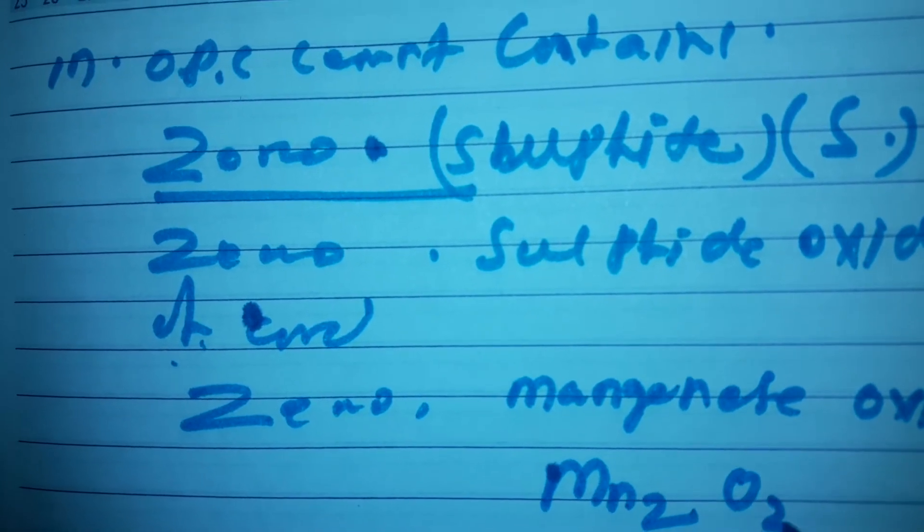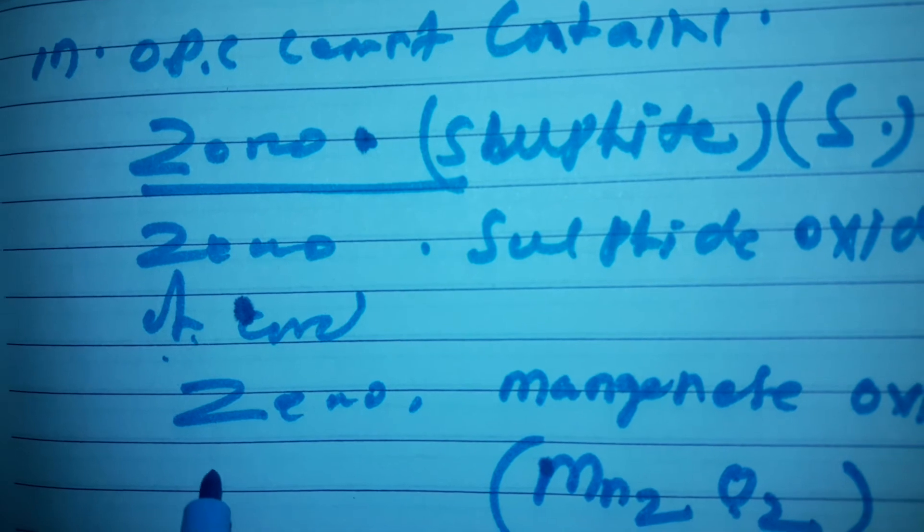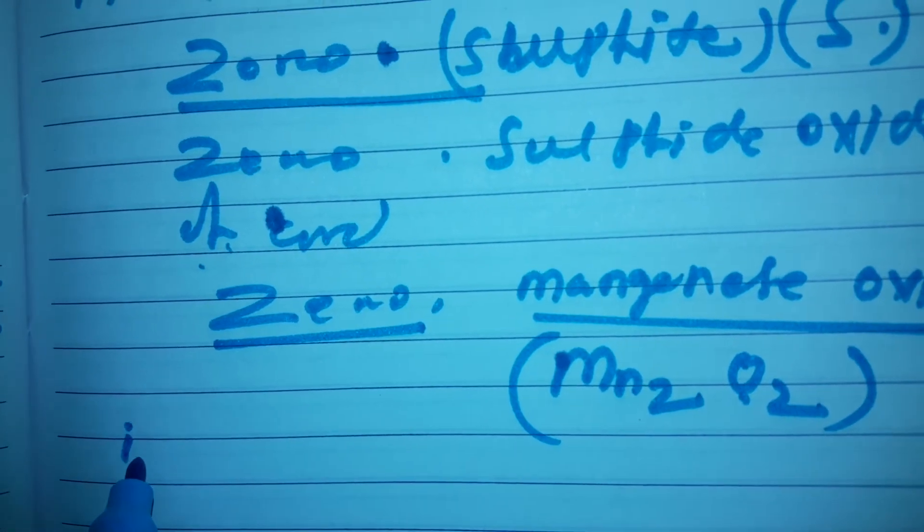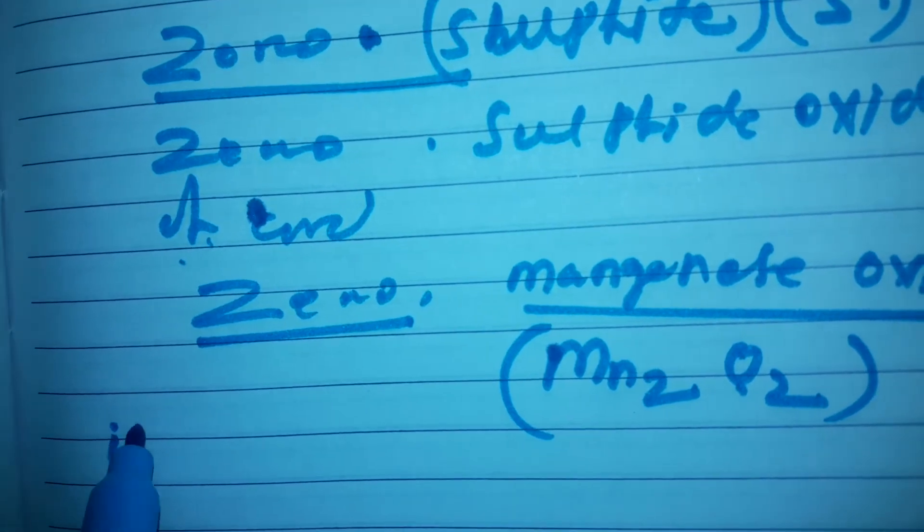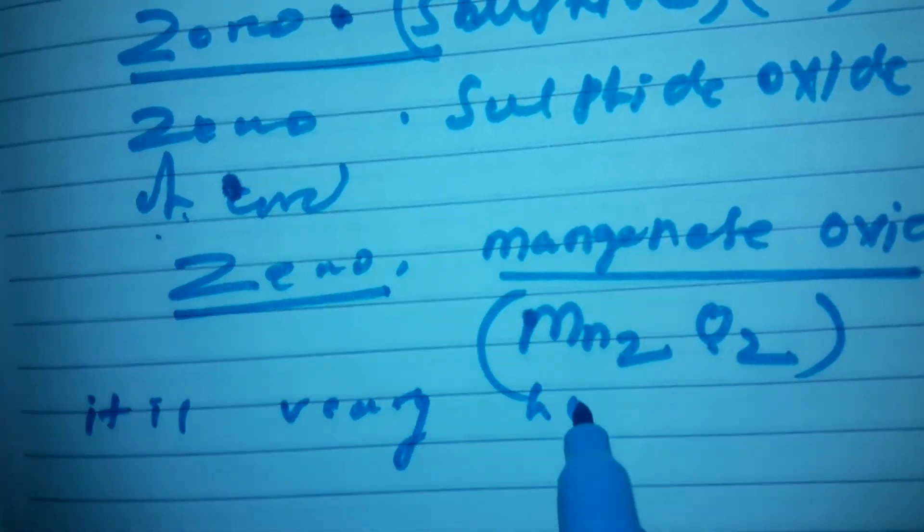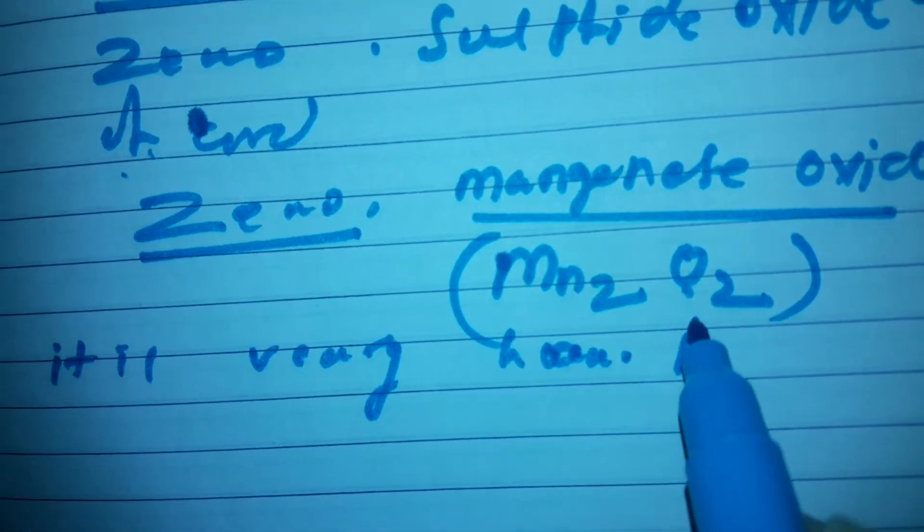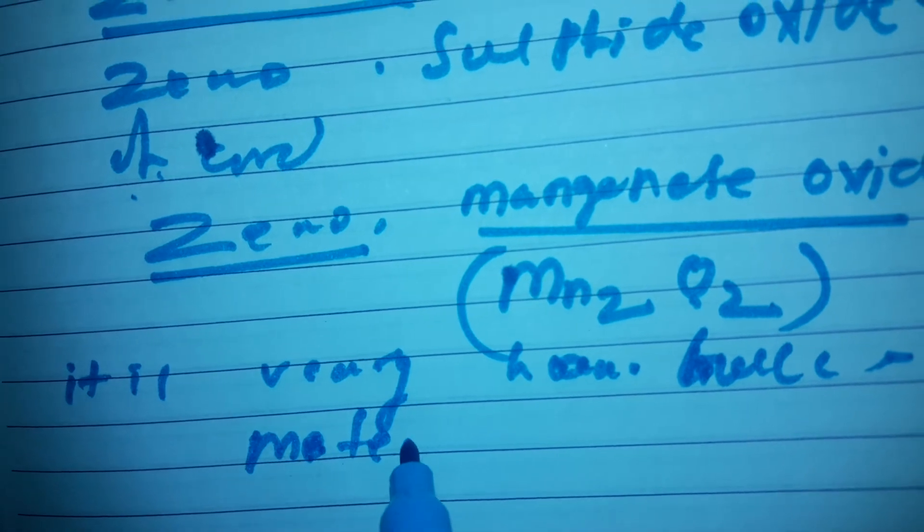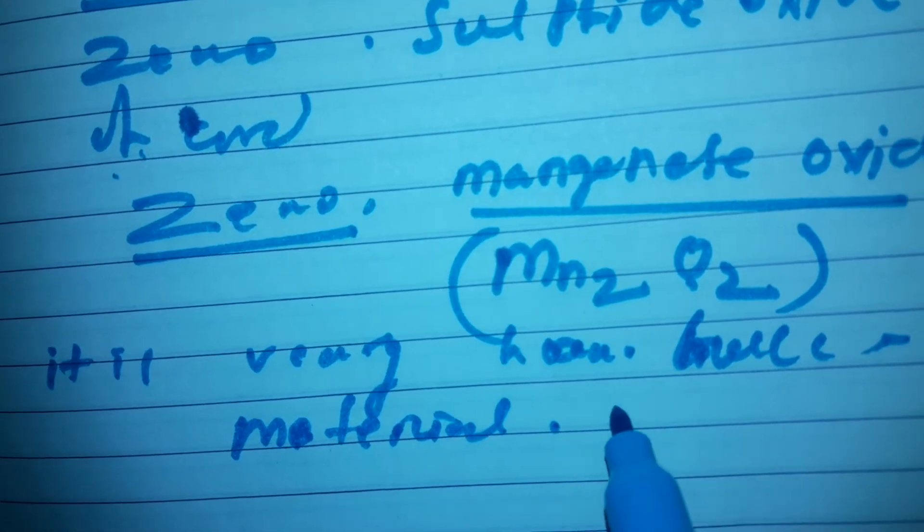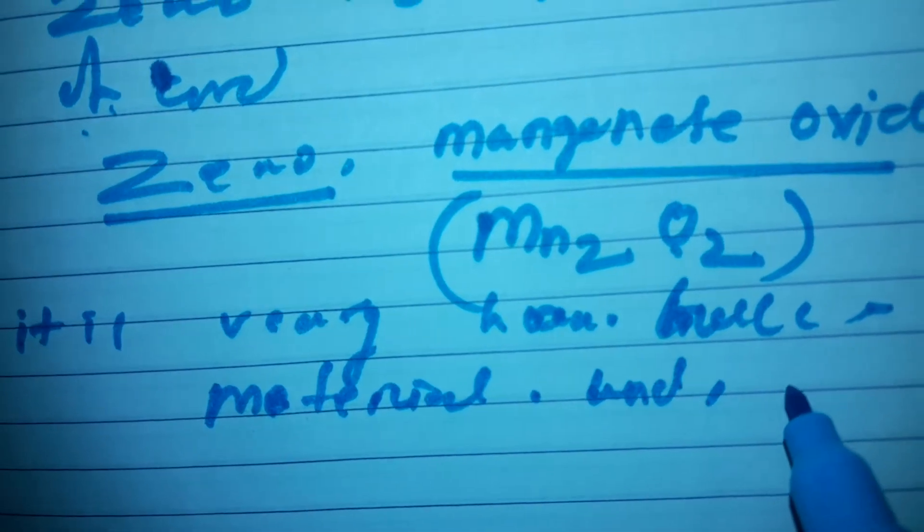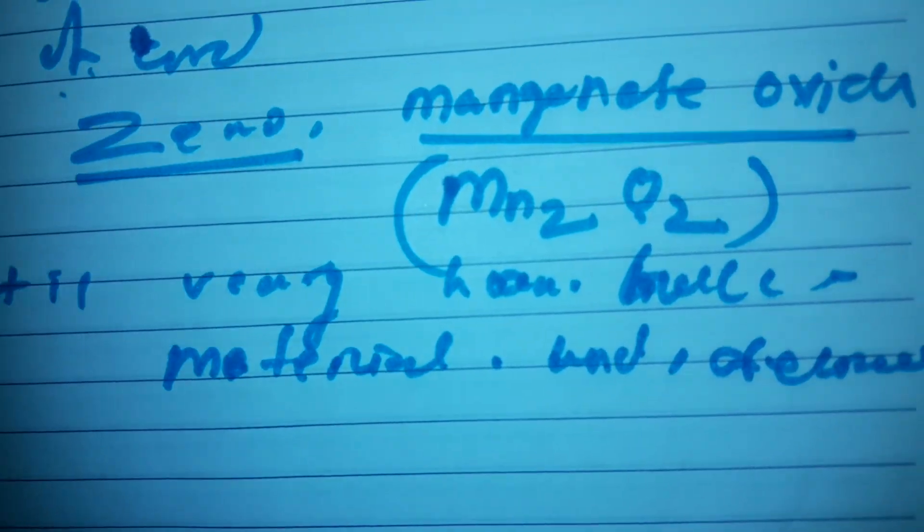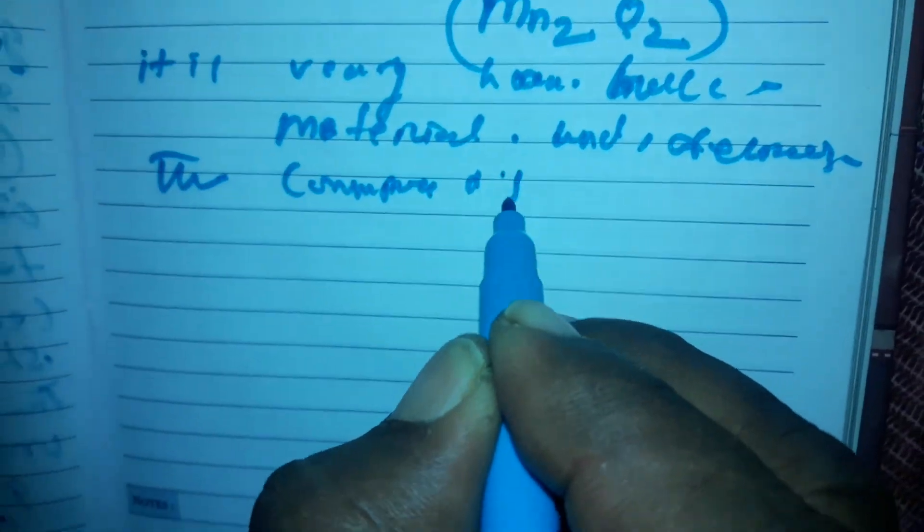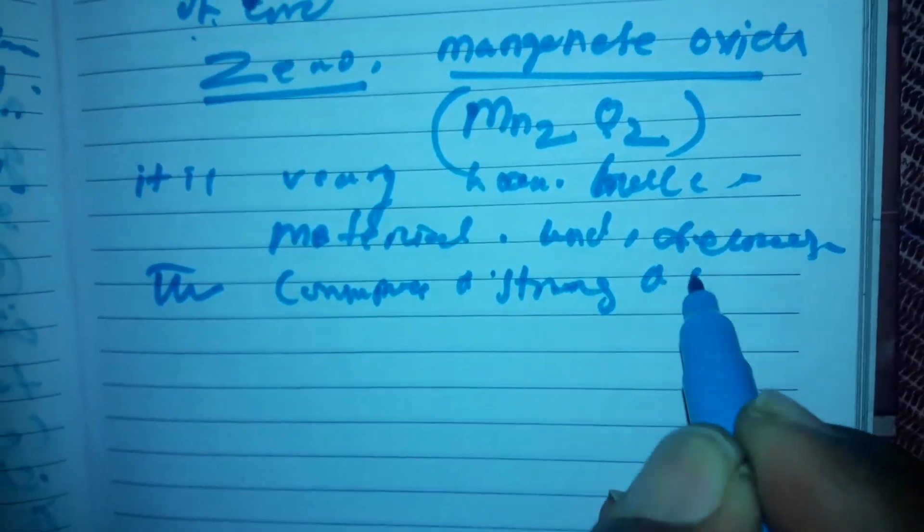Manganese oxide is very dangerous material, it is a very harmful chemical and decreases the compressive strength of cement.